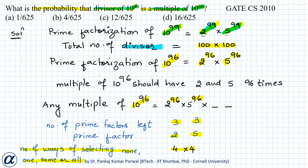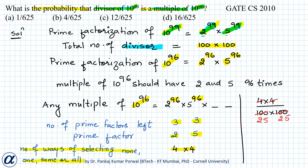So the probability that a divisor of 10 to the power 99 is a multiple of 10 to the power 96 is 4 into 4 divided by 100 into 100. The 4 cancels 125 times with 100 (since 100/4 = 25, and 25×25 = 625), so the probability equals 1 divided by 625. So the correct option is confirmed.